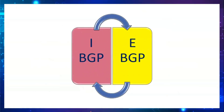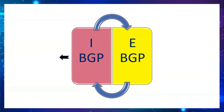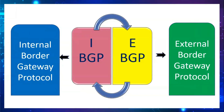In BGP we have two types: IBGP and EBGP. IBGP stands for Internal Border Gateway Protocol. EBGP stands for External Border Gateway Protocol. IBGP is used to exchange routing information within a single AS — it plays within the single AS for internal routing.